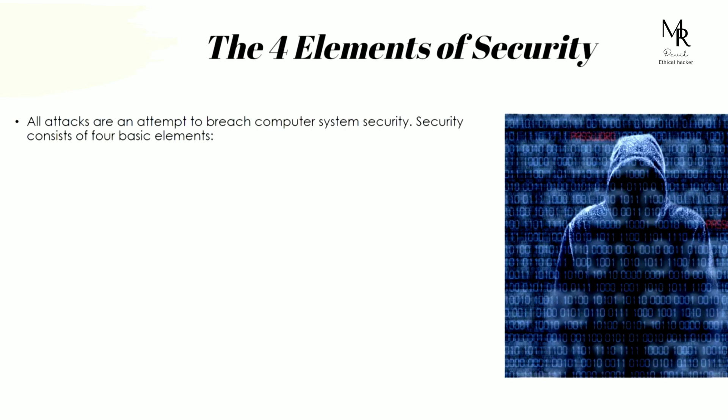The first element is confidentiality, the second is authenticity, then we have integrity, and then we have availability. We're going to walk through each of these in some detail with examples.